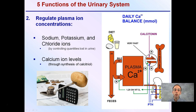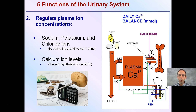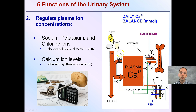Another function of the urinary system is to regulate plasma ion concentrations, and this does occur in the kidneys. How much is it going to absorb? How much is it going to release into the urine? This is part of the urinary system maintaining that balance between plasma ion concentrations.